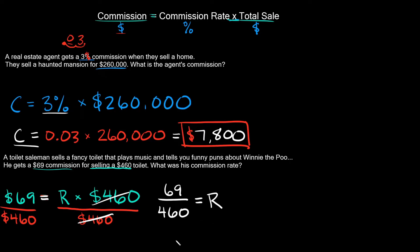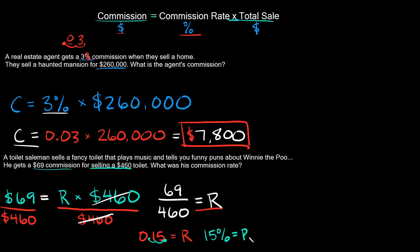Throwing that into the calculator: 69 divided by 460 equals 0.15, and that equals R. But remember, the units for commission rate are a percentage. To turn 0.15 into a percent, move the decimal two places to the right: one, two — giving you 15. So his commission rate was 15%.